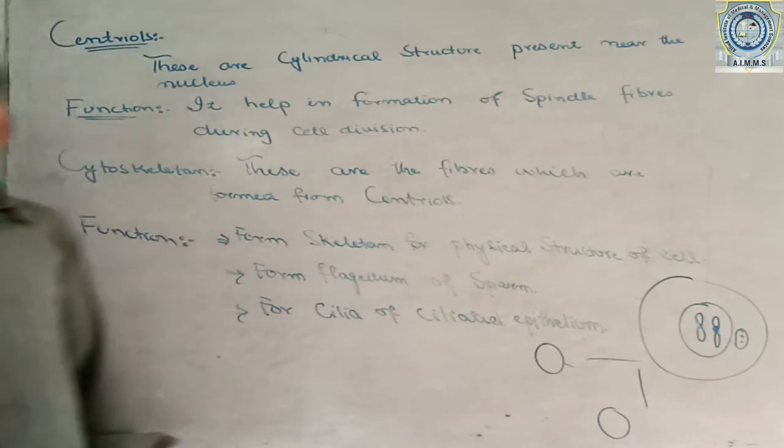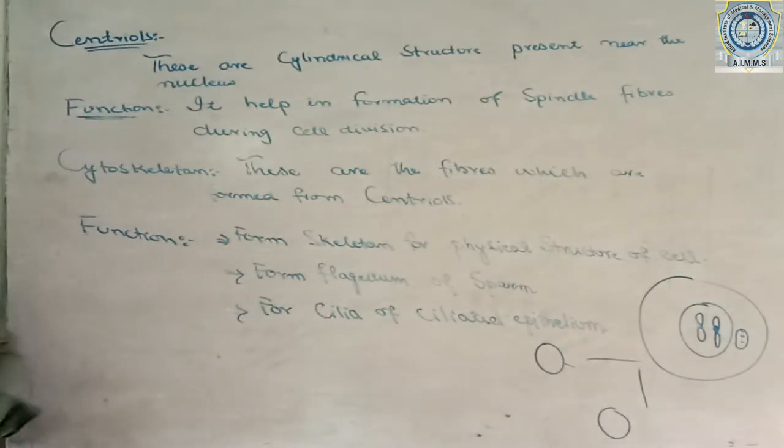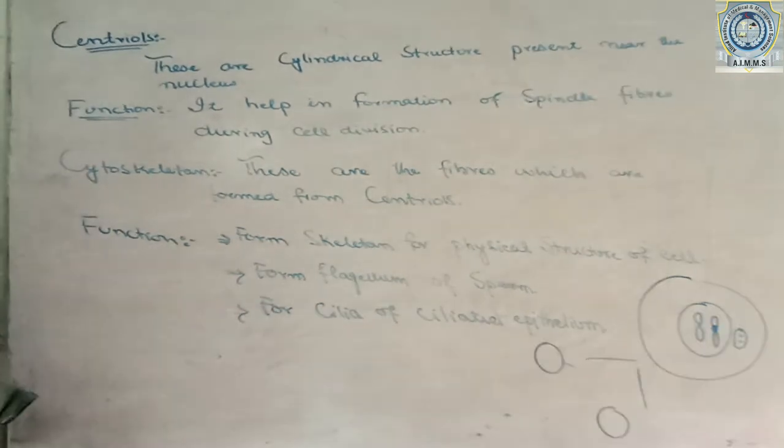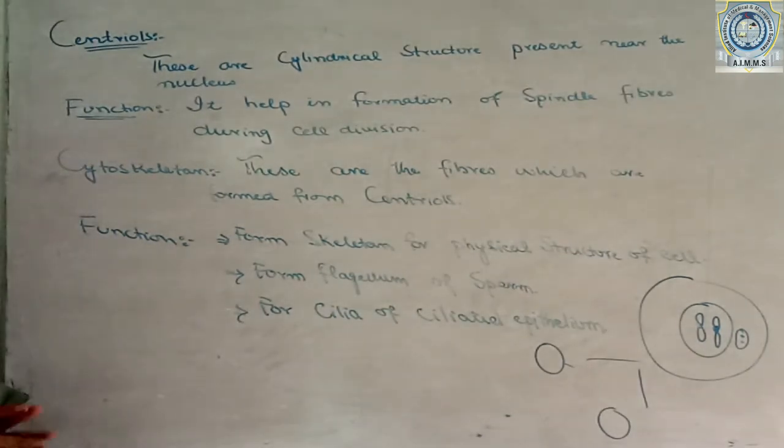We have the fibers and the chromosomes are attached. The chromosomes are divided, so we have the cells.